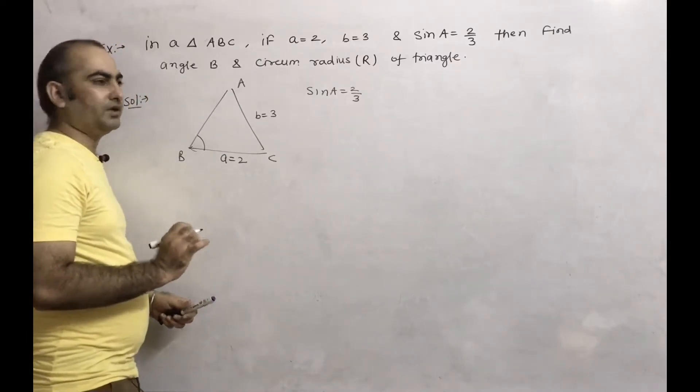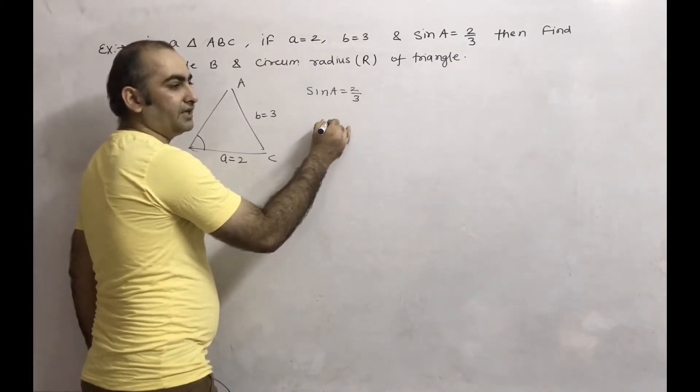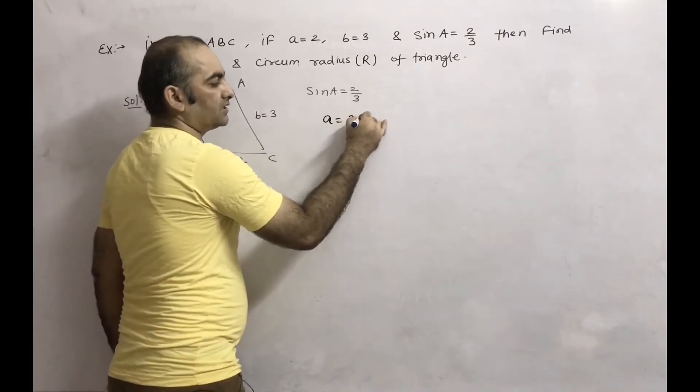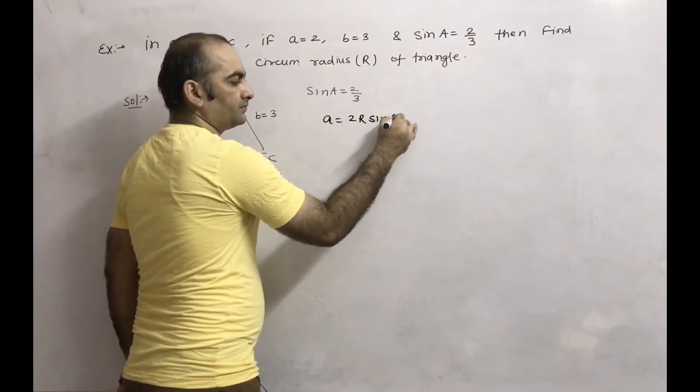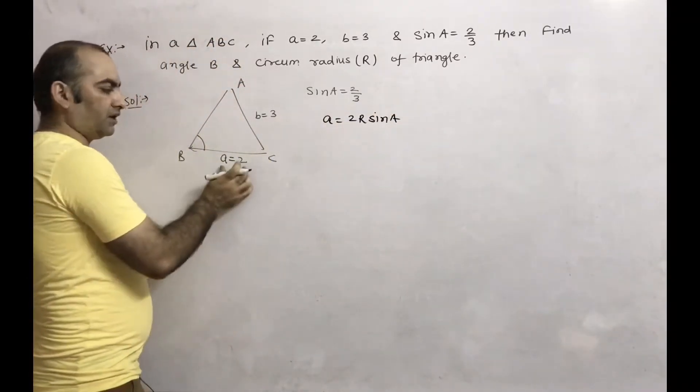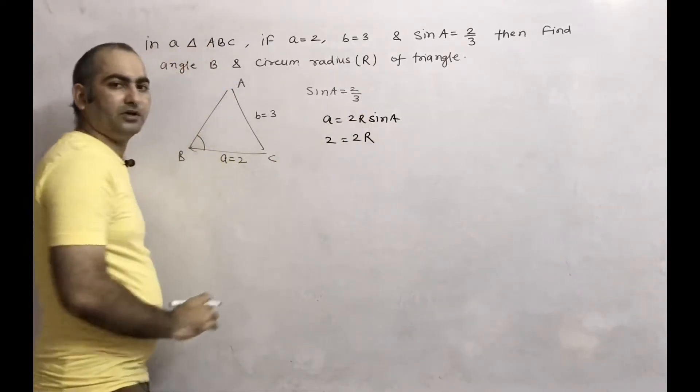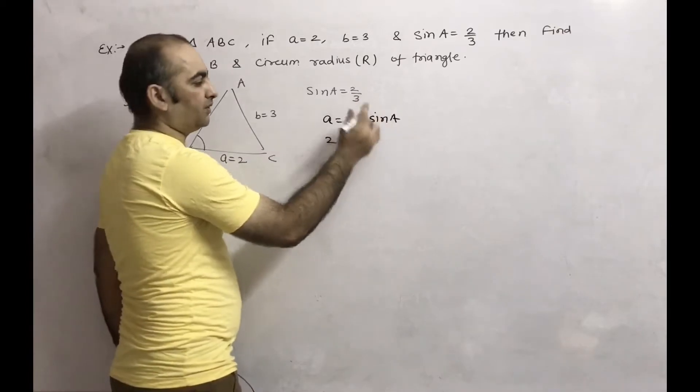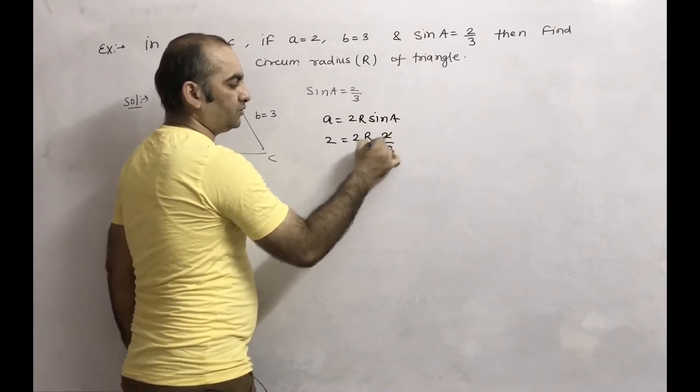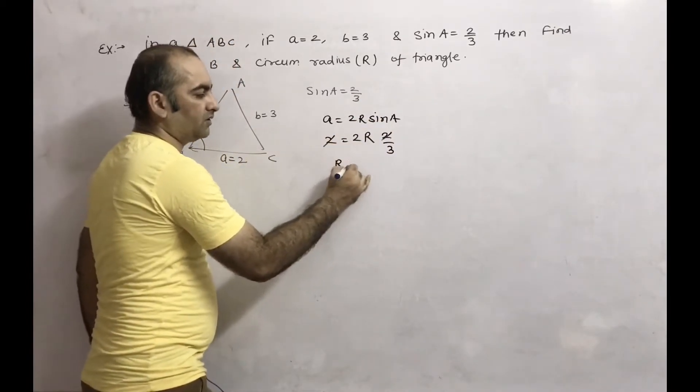According to sine rule, we can see that a equals 2R sine A. The value of a is 2, so 2 equals 2 times capital R times sine A. Sine A value is 2/3. The 2s cancel, so capital R equals 3/2.